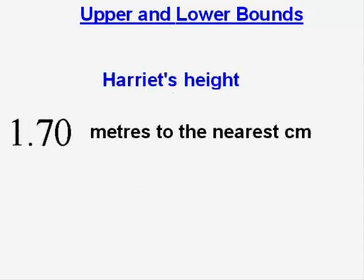Now this last example is slightly trickier because we're talking about two different units here. Harriet has measured her height as 1.70 metres and that's rounded to the nearest centimetre. Now a centimetre is one hundredth of a metre. So a centimetre is 0.01 metres. And so we need half a centimetre on either side of that. The half of 0.01 is 0.005.